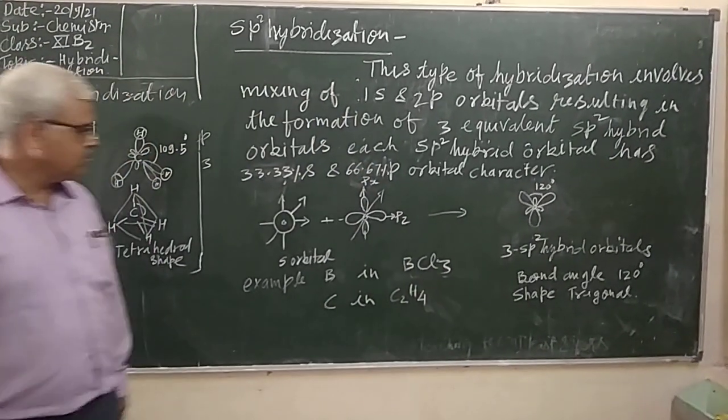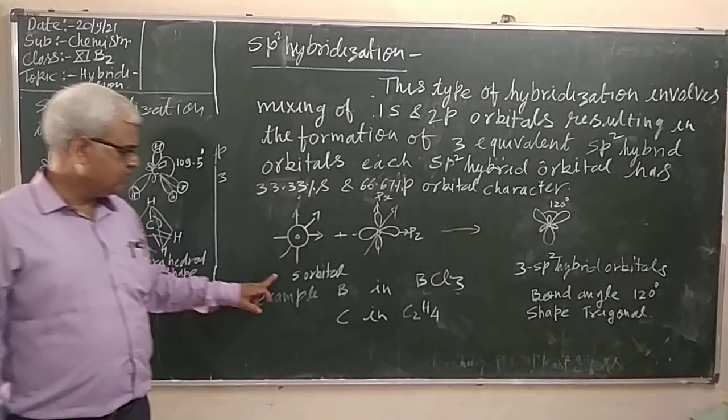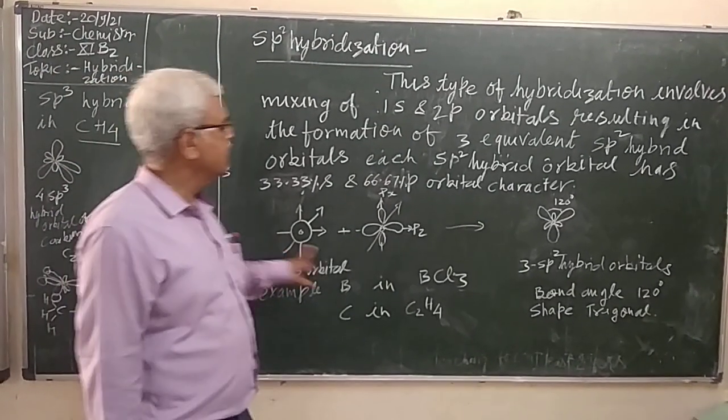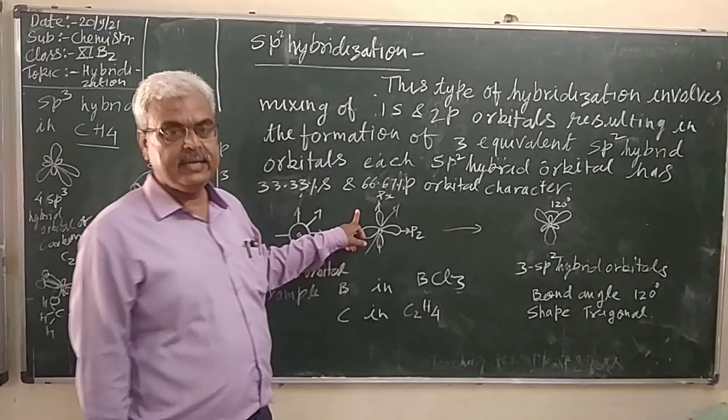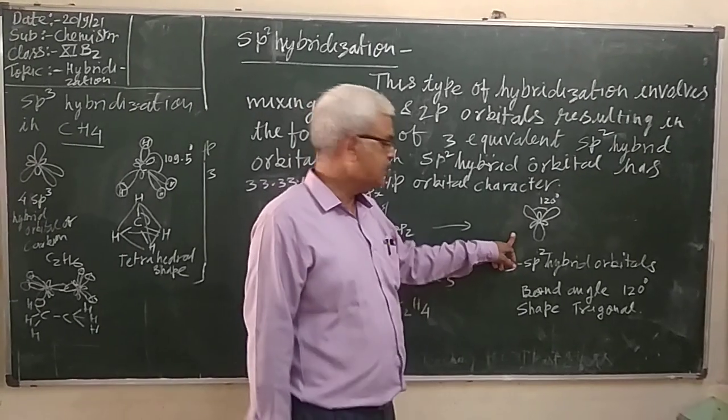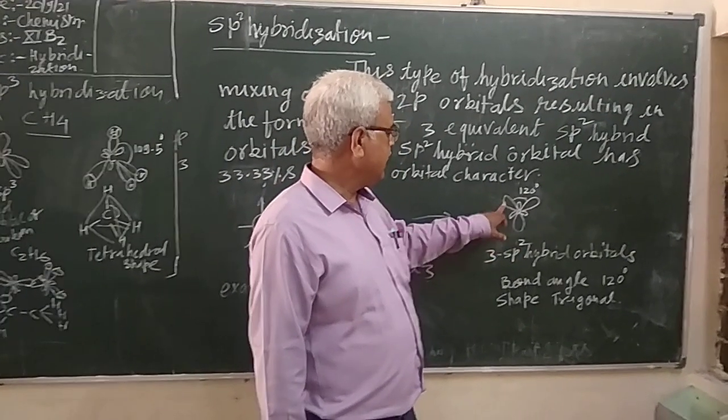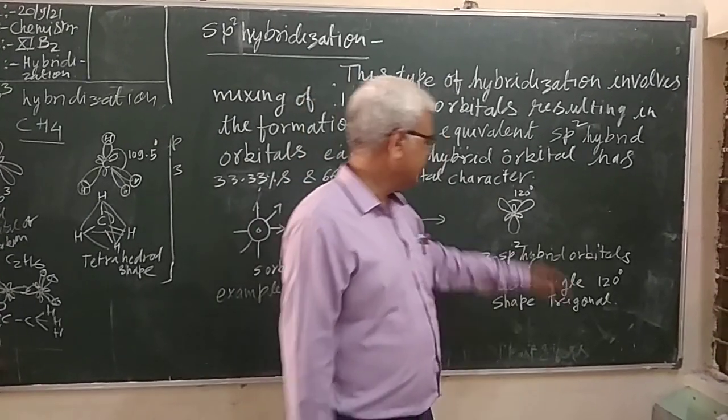We can also learn with the help of this diagram. This is 1S orbital and these are 2P orbitals. These undergo hybridization to form this trigonal shape SP2 hybrid orbital.